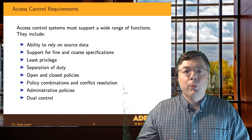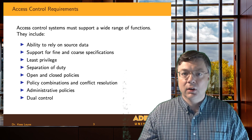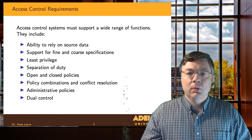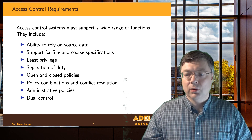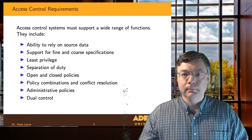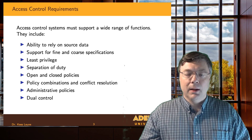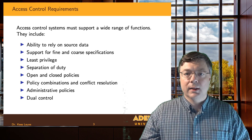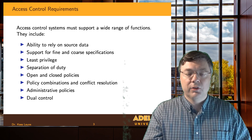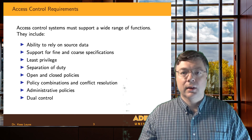We want to make sure that we support the technical access control system with administrative policies. We don't just want to rely on technology; we also want rules and regulations in place that guide our actions. And we want a concept of dual control, similar to separation of duty, where we have to collaborate in order to do something. A change of grade is one of those things — I cannot, as a professor, do a change of grade by myself. I have to collaborate with the department chair and the dean. All three of us need to approve, and that is a measure to control fraud or other kinds of academic dishonesty.